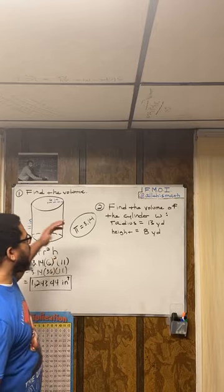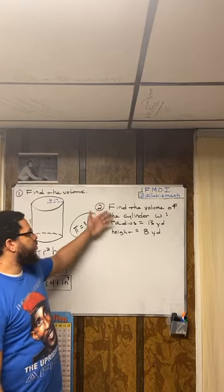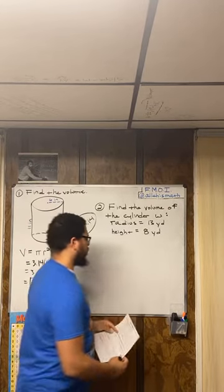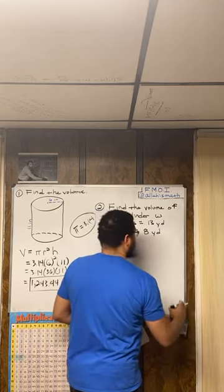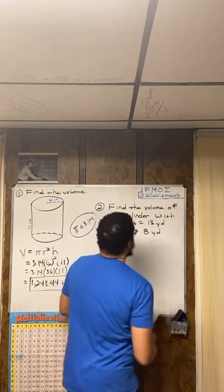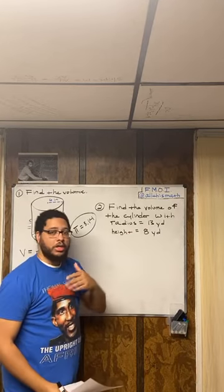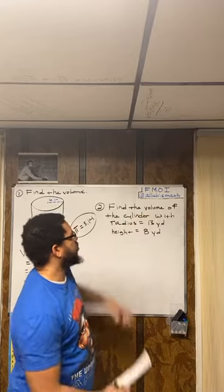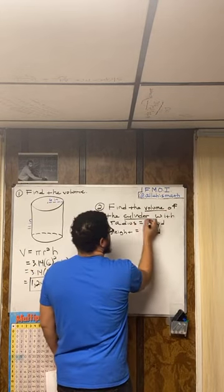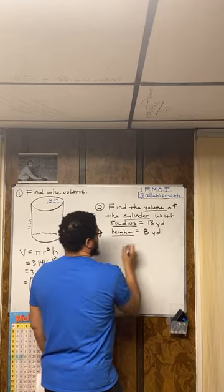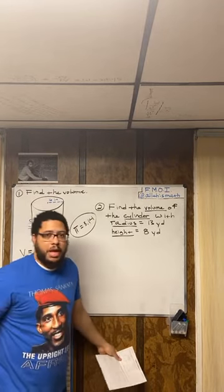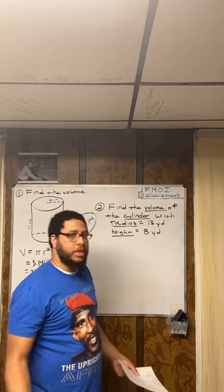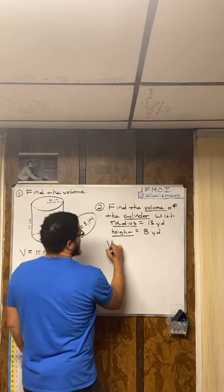Now, our second example over here. We don't have a picture, but we have the information that we need. Number two, find the volume of the cylinder with radius 13 yards and height 8 yards. Now, I'm trying to find the volume. It's a cylinder. I know the radius. I know the height. I'm not missing any other information. I got everything I need in order to find the volume, because I know the formula. I know the instructions. I know the directions. All you have to do is just write down the formula.